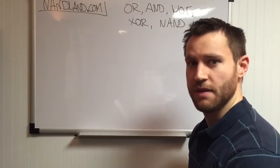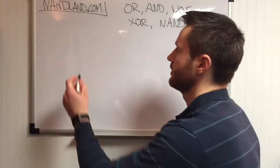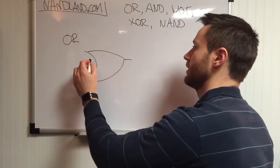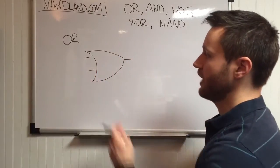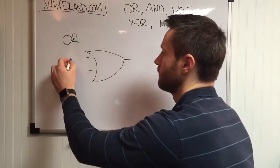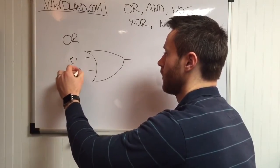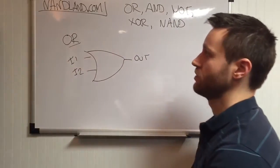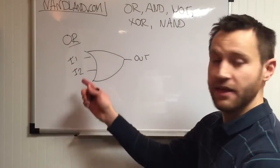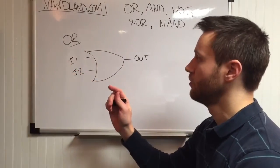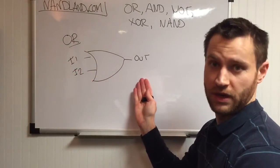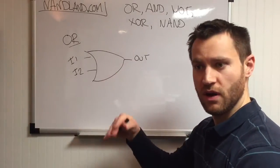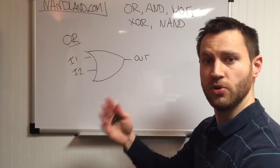If you didn't watch the first video, that's okay — I'm going to do the OR gate again. This is what an OR gate looks like. A simple OR gate has two inputs and one output. As you can maybe surmise, if either of the inputs is a one, then the output will be a one. I just want to make it clear that when I say one or zero, I'm talking about Boolean algebra.